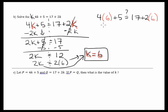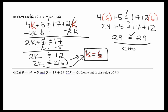This is arithmetic now. 4 times 6, 24 plus 5. Is it equal to 17 plus 12? 24 plus 5 is 29, 12 is 29. It is equal. We just checked our work. This is our check. That's what it looks like.